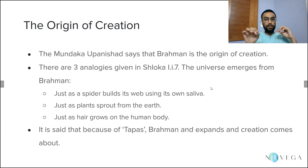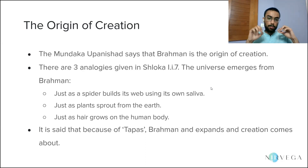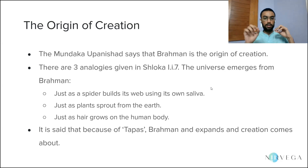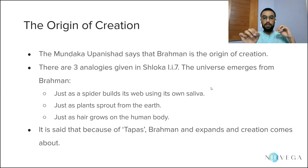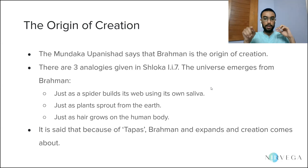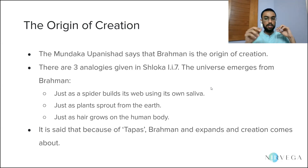The next topic is about the origin of creation. The Mundaka Upanishad says that Brahman is the origin of creation, and it says so in multiple places. There are three analogies given in shloka 1.1.7 — that is 1st Mundaka, 1st Khanda, 7th shloka — which say that the universe emerges out of Brahman.